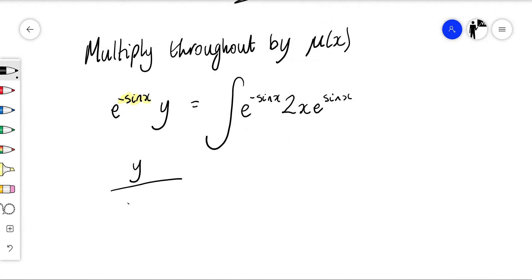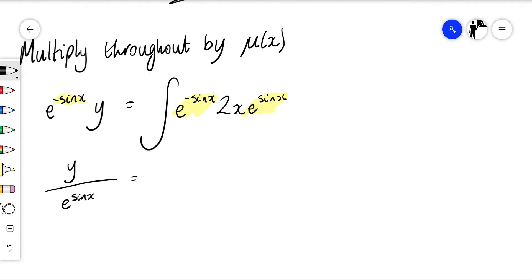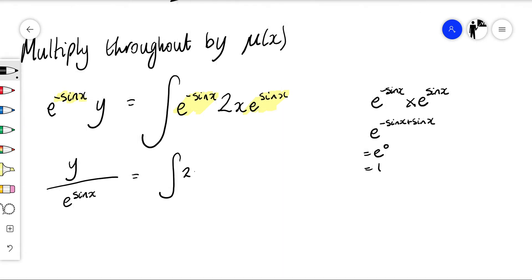So that gives me y over e to the sine x equals... let's simplify anything here. I've got all these terms multiplying but notice I've got this multiplied by this, so I could add those powers. That'll become e to the minus sine x plus sine x, which is e to the power of 0, which is 1. So this just becomes the integral of 2x with respect to x.